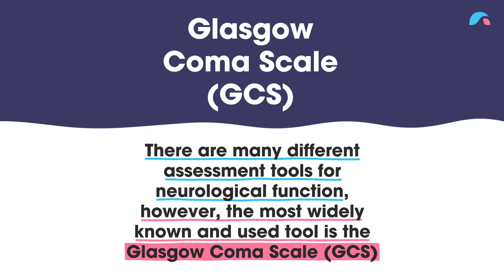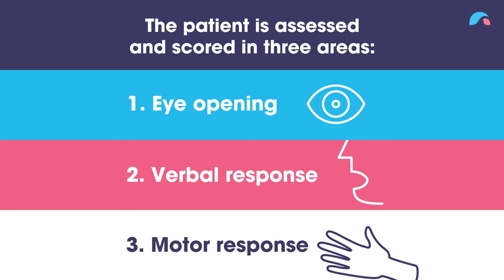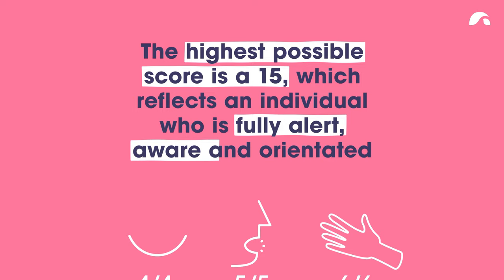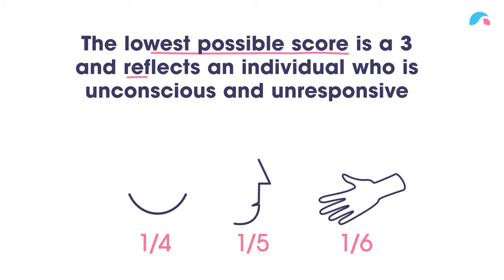The GCS sees a patient assessed and scored in three areas of neurological function: one, eye opening; two, verbal response; and three, motor response. The highest possible GCS is a score of 15, which reflects an individual who is fully alert, aware and orientated. The lowest possible score is three, meaning the person is unconscious and unresponsive.